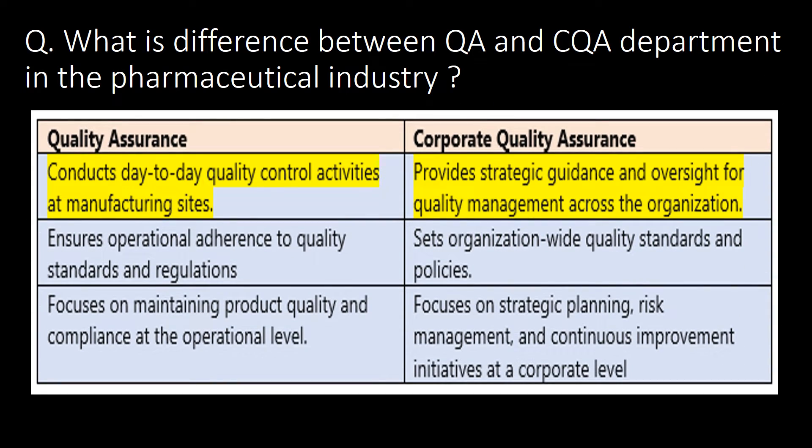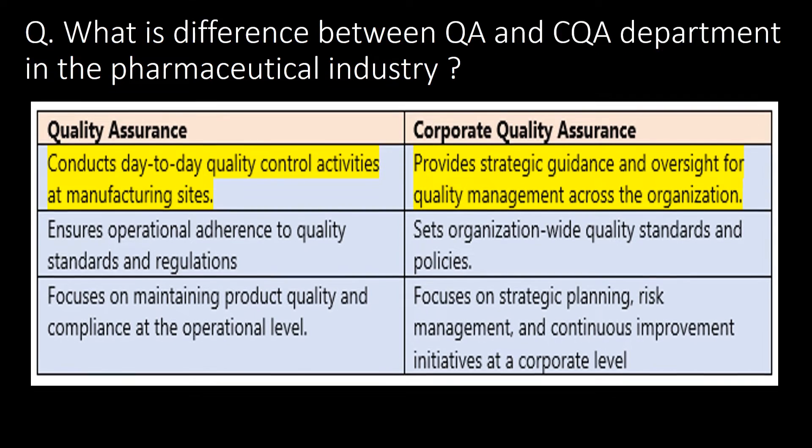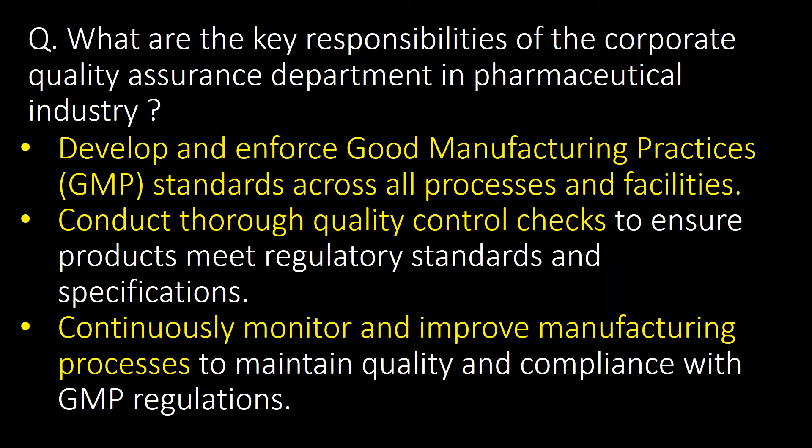Welcome. We will start with some basic questions and then go into detail. First question: what is the difference between QA and CQA department in the pharmaceutical industry? The major difference is that QA, that is Quality Assurance, conducts day-to-day quality control activities at manufacturing sites, whereas CQA, that is Corporate Quality Assurance, provides strategic guidance and oversight for quality management across the organization.